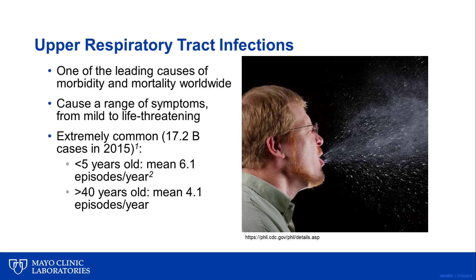Upper respiratory infections are one of the leading causes of morbidity and mortality worldwide and may result in a range of symptoms from mild clinical manifestations such as a cough, pharyngitis, or runny nose to life-threatening disease that may involve respiratory distress. Infections of the upper respiratory tract are extremely common, with an estimated 17.2 billion cases worldwide in 2015. Individuals can have multiple upper respiratory infections each year, with children less than five years old experiencing a mean of 6.1 episodes per year, and adults older than 40 suffering from about 4 upper respiratory infections each year.